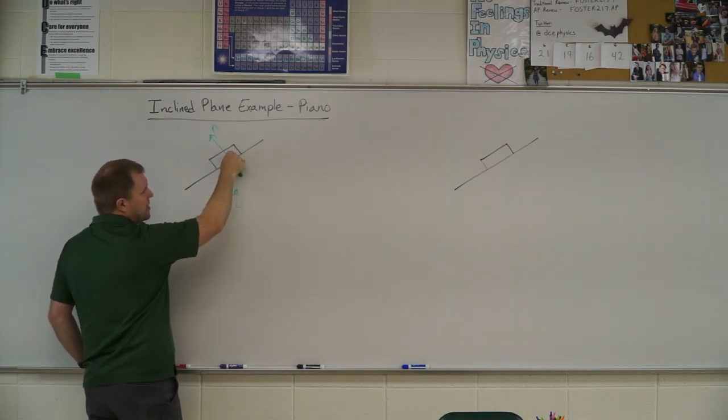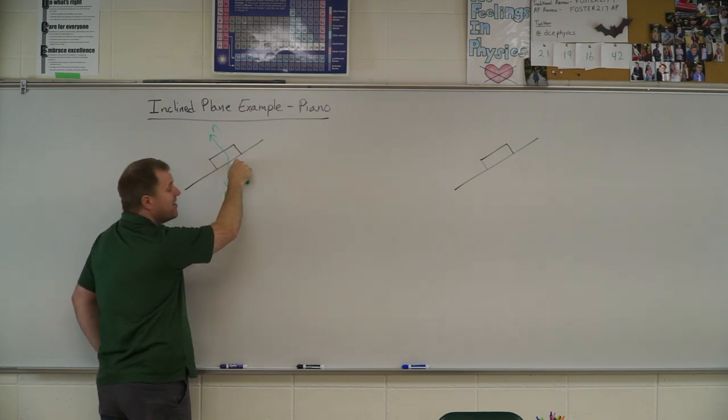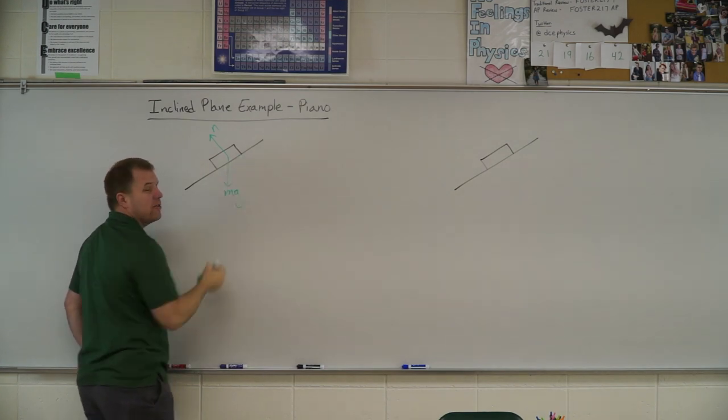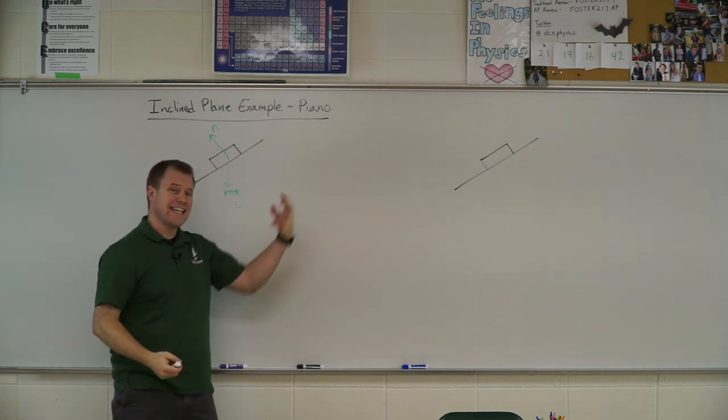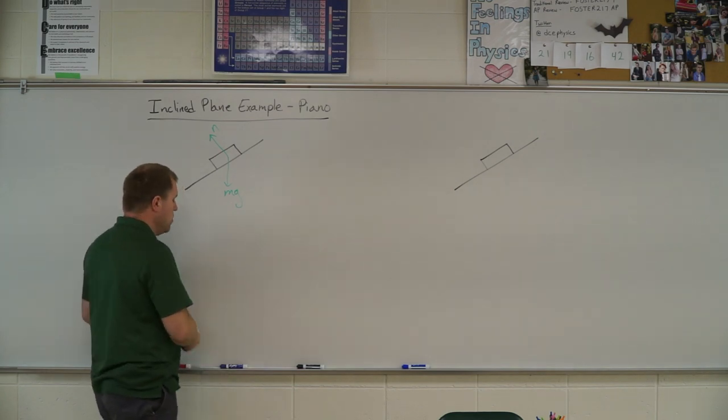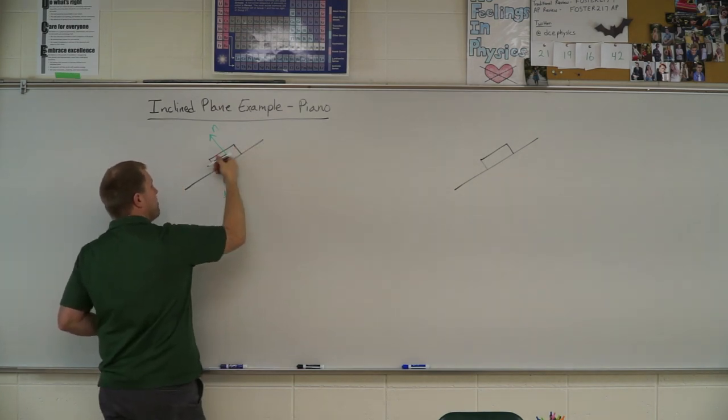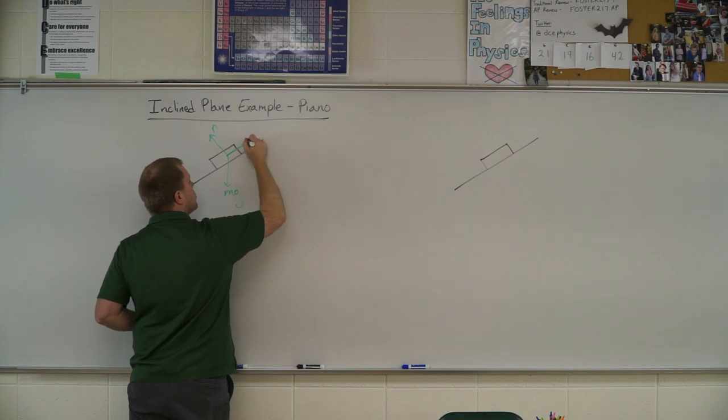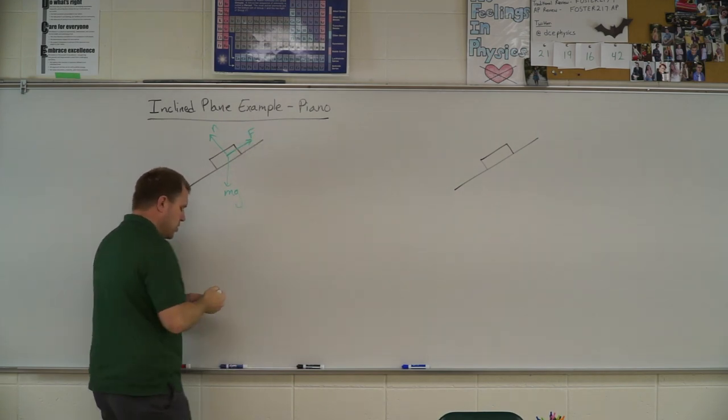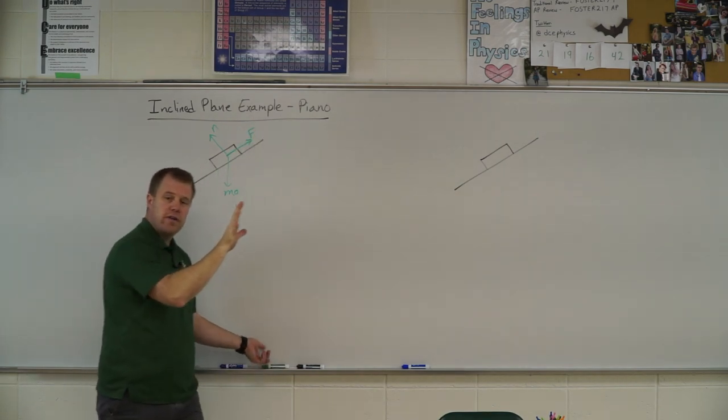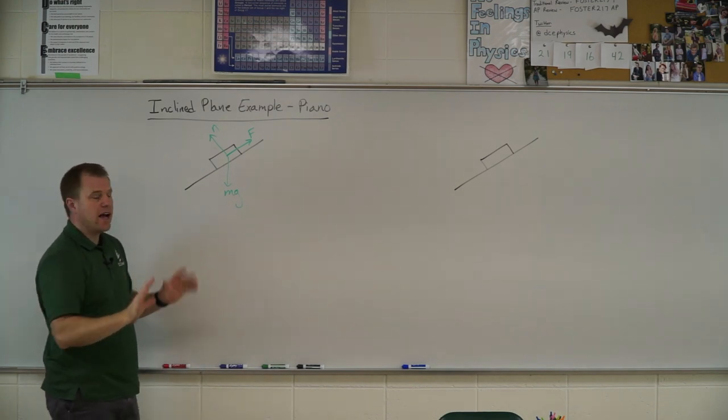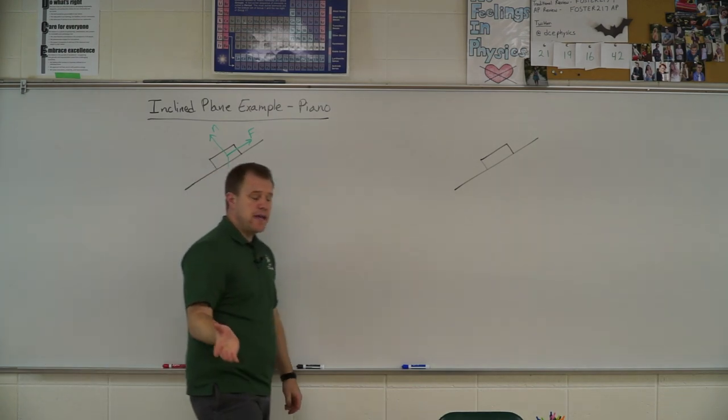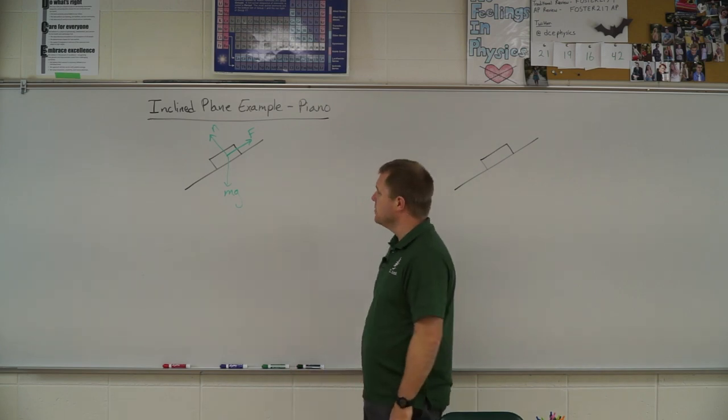So part of gravity is holding it on the incline and part of gravity is pushing it down the incline. So gravity is trying to bring it down the incline. So that means our man who is pushing parallel needs to push up the incline to slow that acceleration to zero so that it can move at a constant rate. And when moving a piano, just as a public safety announcement here,